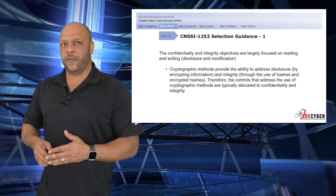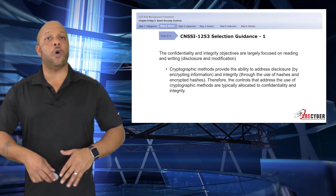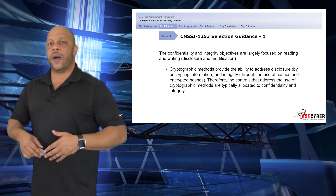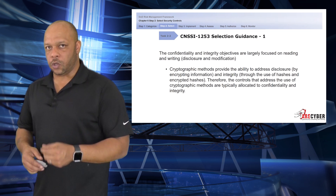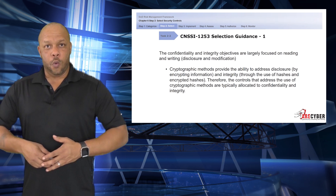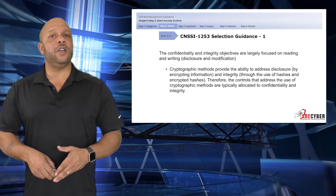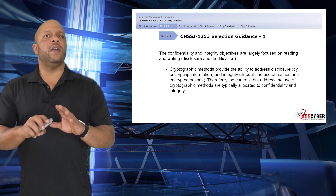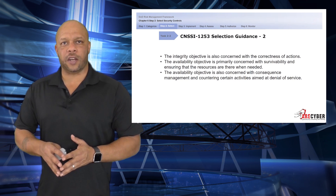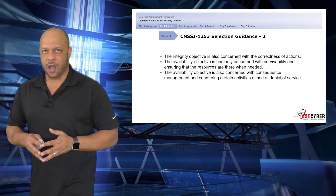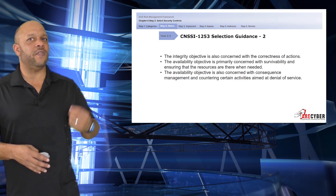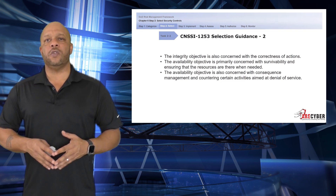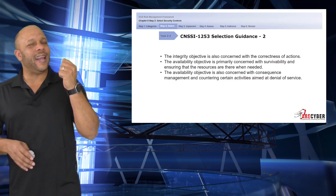Guidance one in the 1253: the confidentiality and integrity objectives are largely focused on reading and writing, or disclosure and modification. Cryptographic methods provide the ability to address disclosure by encrypting information, hence protecting against disclosure. Integrity, through uses of hashes and cryptographic hashes, will protect against modification. The controls that address cryptographic methods are typically allocated to confidentiality and integrity-based controls. Amplifying guidance two deals with the integrity objective, understanding it's also concerned with correctness of action. The availability objective is primarily concerned with survivability, ensuring resources are there when the user requires them, and also with consequence management and countering activities aimed at denial of service.